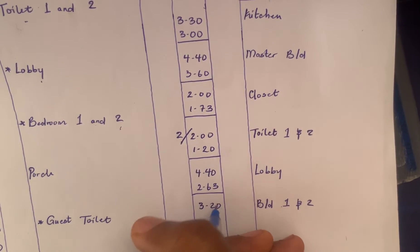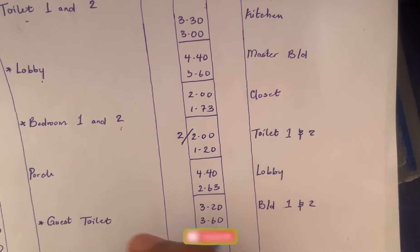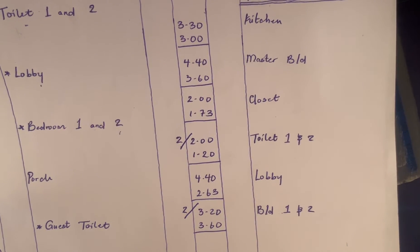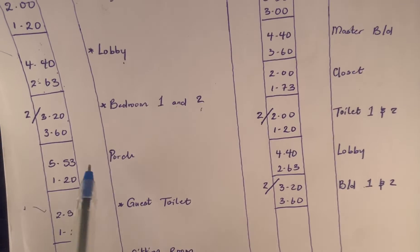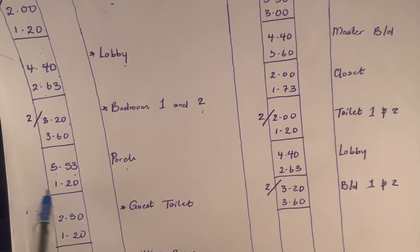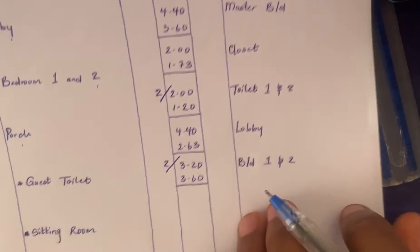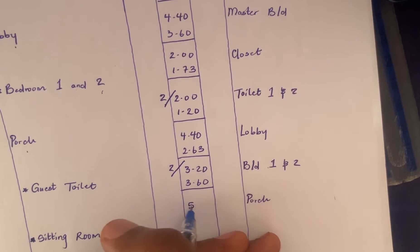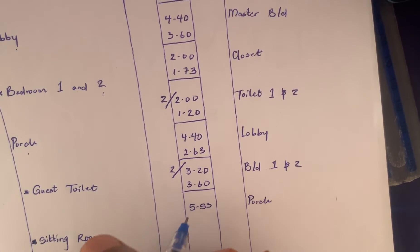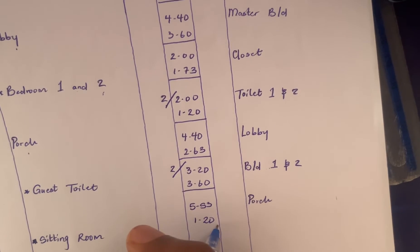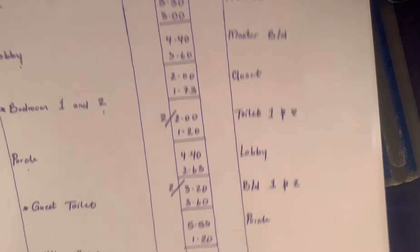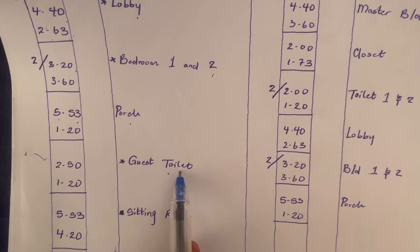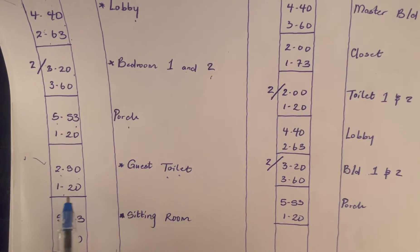The next would be the porch, which we calculated as 5.53 by 1.20, so we book that and times it by two. Then the guest toilet, which we calculated as 2.50 by 1.20.